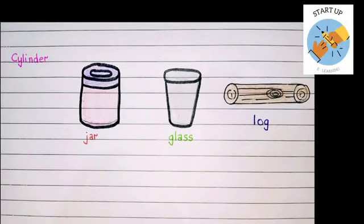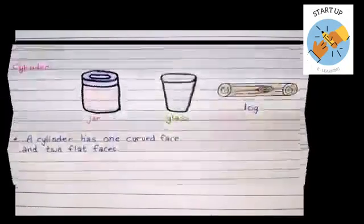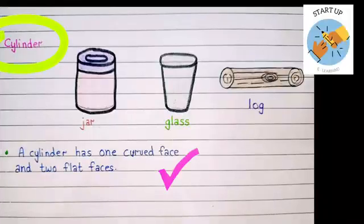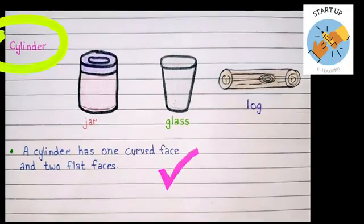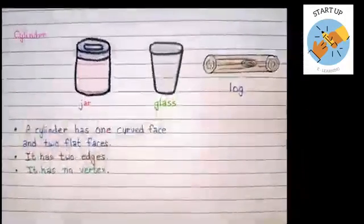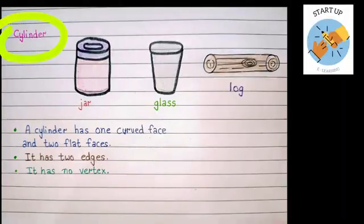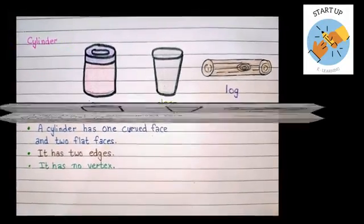Yes, a big piece of wood. Now let's understand some qualities of a cylindrical shape. A cylinder has only one curved face and two flat faces. It has two edges and it does not have any vertex.